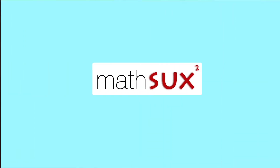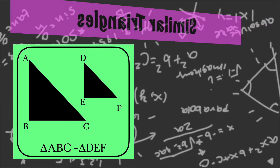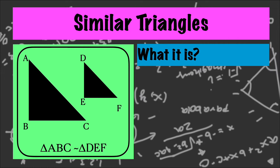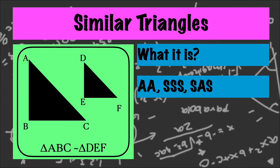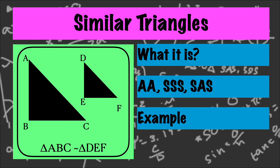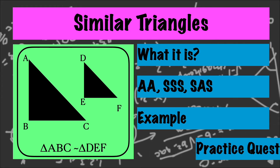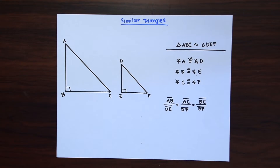Hi everyone and welcome to Math Sucks. This video is going to help you pass geometry. We're going to go over triangle similarity by looking at what similar triangles are, how to prove triangles similar by angle-angle, side-side-side, and side-angle-side. Then we're going to take a look at an example on how to find the missing side of a pair of similar triangles, and finally there'll be some practice questions at the end.